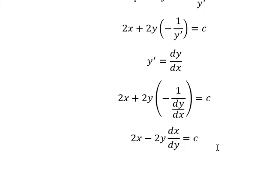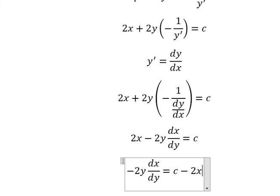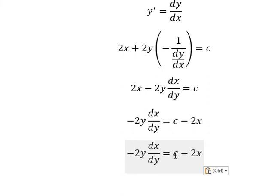Next, I will put 2x go to the right. So I will put c minus 2x go to the left. Negative 2y dy go to the right.